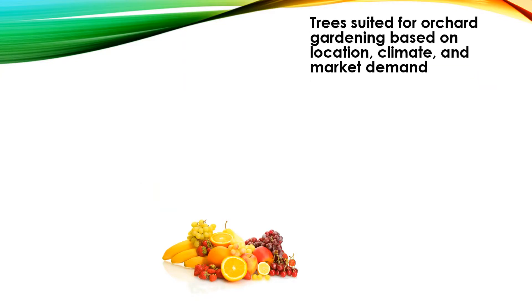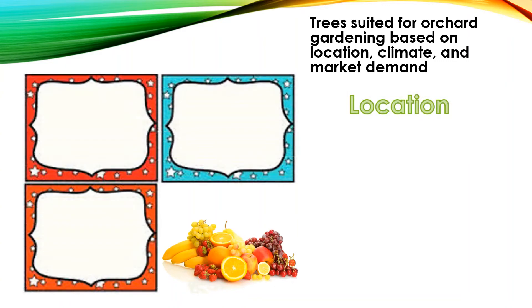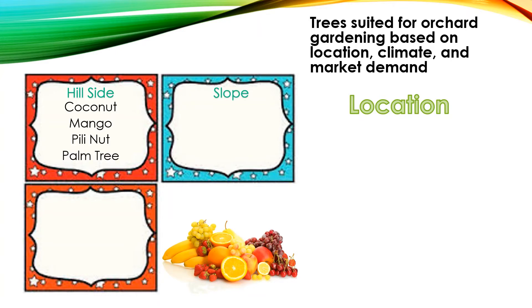Let's now talk about trees suited for orchard gardening based on location, climate, and market demand. Starting with location: if your place is on a hillside, you can plant coconut, mango, pili nuts, and palm trees. If your area is sloping, you can plant mango, coconut, cashew, palm tree, and pili nuts.